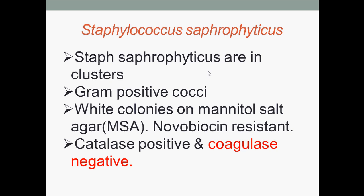The next bacterial species is Staphylococcus saprophyticus. They are arranged in clusters and are Gram-positive cocci. Like Staphylococcus epidermidis, they form white colonies on mannitol salt agar and are novobiocin resistant. Novobiocin is an aminocoumarin antibiotic produced by the actinomycete Streptomyces niveus. They are catalase positive and coagulase negative.